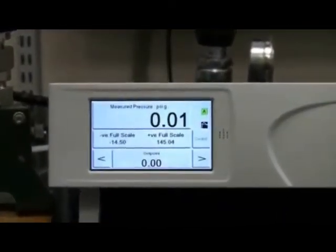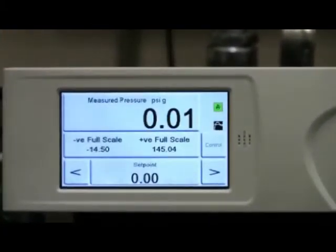Let's zoom in to take a closer look at the LCD color touchscreen display. The PACE 5000 main screen is organized into three sections.